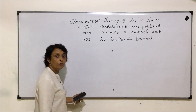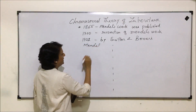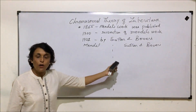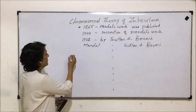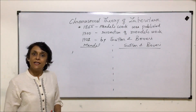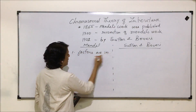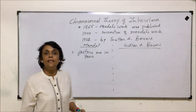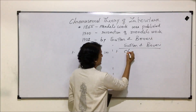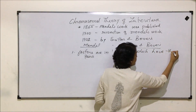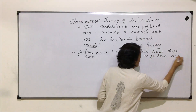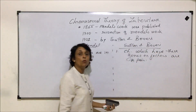Let us try and compare these two points of view — one given by Mendel and the second given by Sutton and Boveri. Mendel said that genes, which he called factors, are present in pairs. Sutton and Boveri said that these factors, which we now know as genes, are present on chromosomes, and these chromosomes are also present in pairs. This pair is known as a homologous pair.